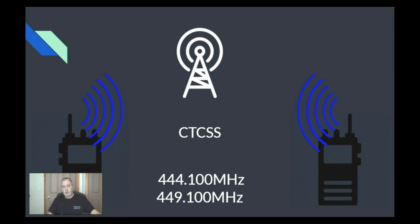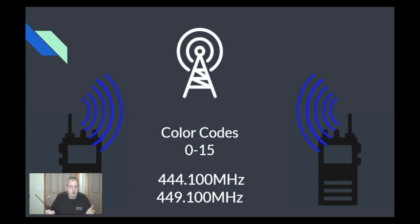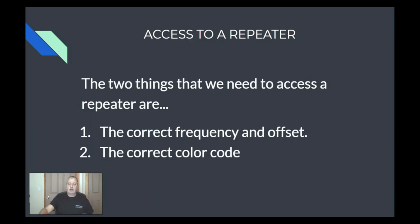In DMR, we do not have CTCSS tones — we have color codes, and they do a lot of the same thing. That color code is transmitted to the repeater, and the repeater says, 'yes, that's the color code I'm supposed to be using,' and it activates, begins rebroadcasting locally, as well as sending the signal out to the internet. There are 16 color codes, from 0 to 15. So in order to access the repeater, you must have the correct frequency and offset, and the correct color code. That will get you into the repeater, but there's a lot more you need to do to talk to who you actually want to talk to.